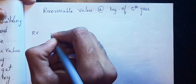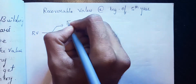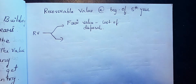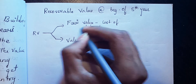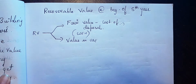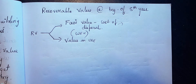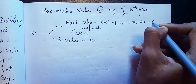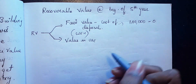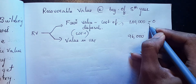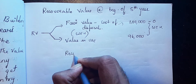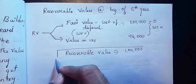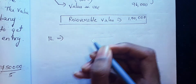Now find the recoverable value. To find the recoverable value, compare two values: fair value minus cost of disposal, and value in use — whichever is higher. In the question, if the company were to dispose the asset it would get one lakh rupees, so fair value minus cost of disposal equals one lakh minus zero equals one lakh. Value in use is ninety-six thousand. One lakh is higher than ninety-six thousand, so the recoverable value is one lakh rupees.